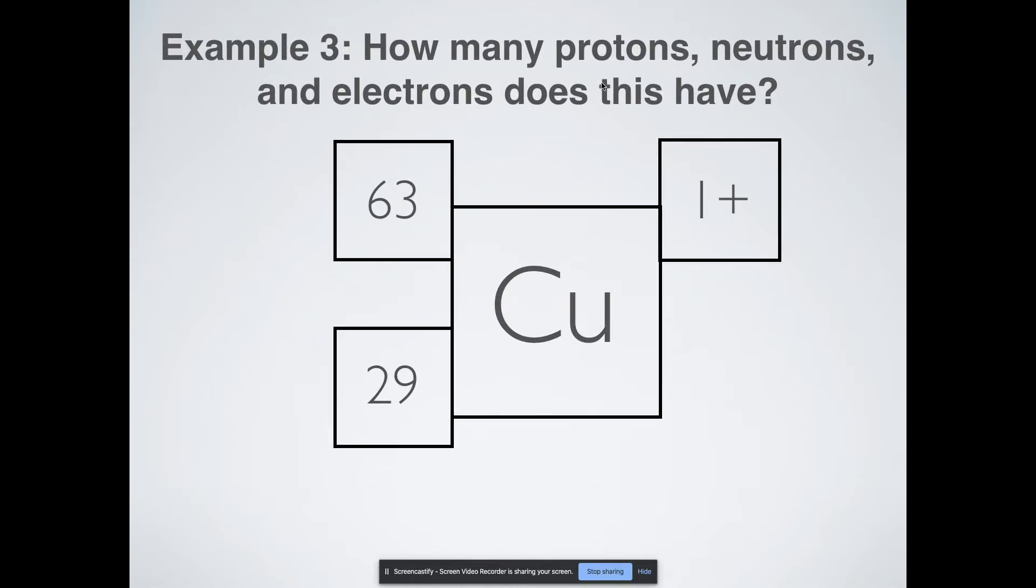How many protons, neutrons, and electrons does this one have? All right. So let's go with the easy ones first. How many protons does copper have? Remember, regardless if it's neutral or not, the number of protons is always given by the atomic number. So that would mean we have 29 protons.